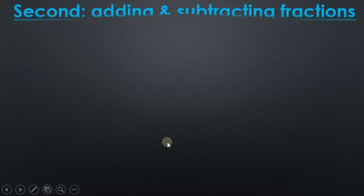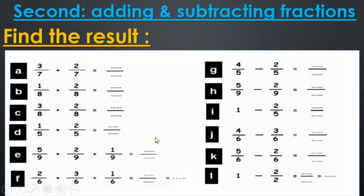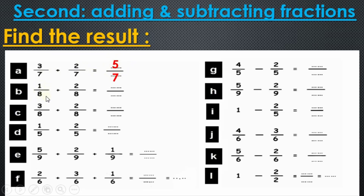Now let's look at the second lesson: adding and subtracting fractions — find the result. Question number a: three sevenths plus two sevenths. Important rule: we add the numerators on top normally, and the denominator stays as it is — will be down as it is. Three plus two equals five, and the denominator seven stays down. So the answer is five sevenths. Question b: one over eight plus two over eight. One plus two equals three — eight stays down. Answer: three eighths. Question c: three eighths plus two eighths. Three plus two equals five, eight stays down — five eighths.